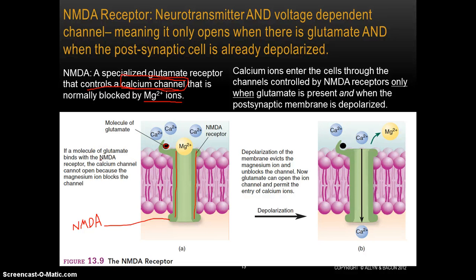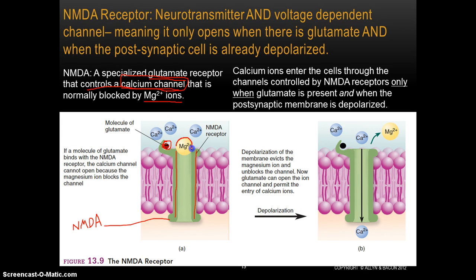Normally, what happens with a receptor is that when its appropriate neurotransmitter binds with it, that allows ions to come flowing inside. But the interesting thing about NMDA receptors is that that's not necessarily the case. If a molecule of glutamate binds with the NMDA receptor, as this picture shows, the calcium channel can't actually open because the magnesium ion is blocking the channel.